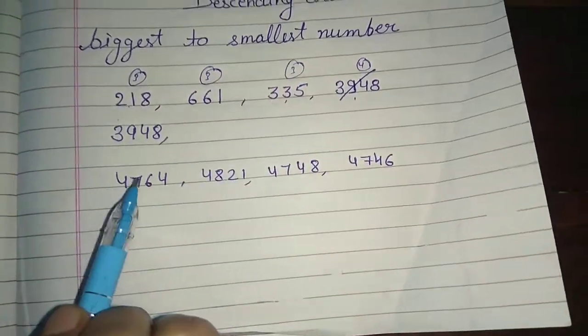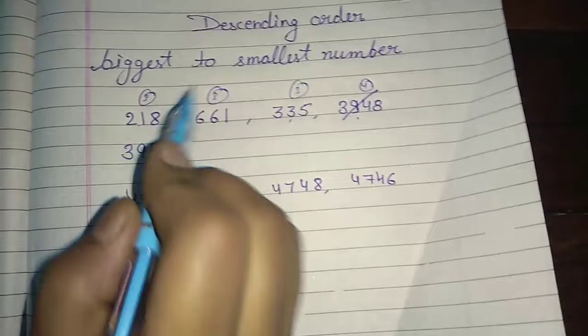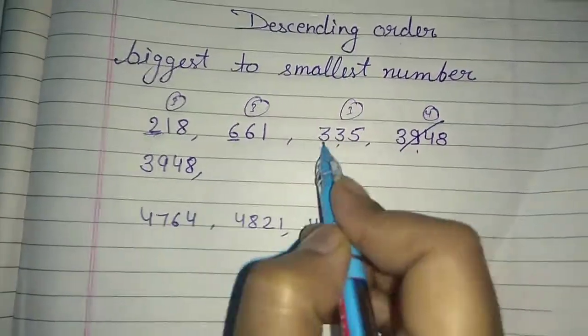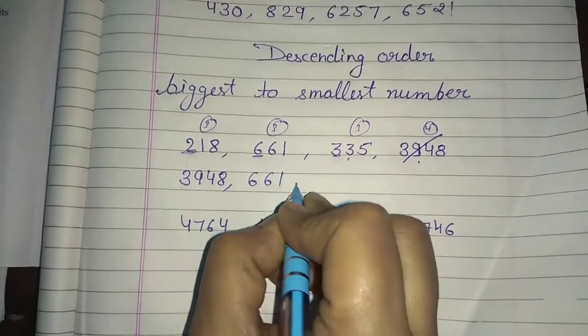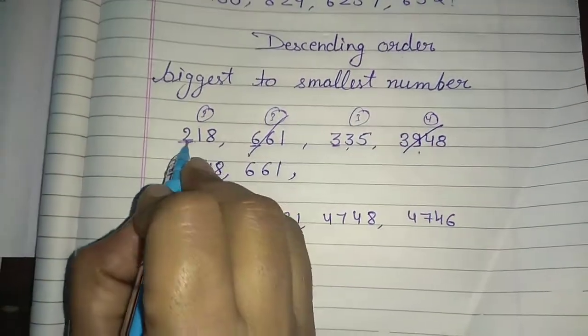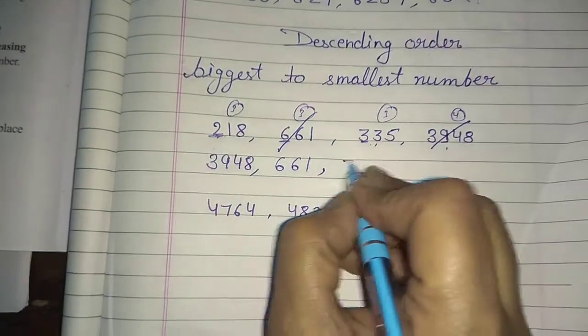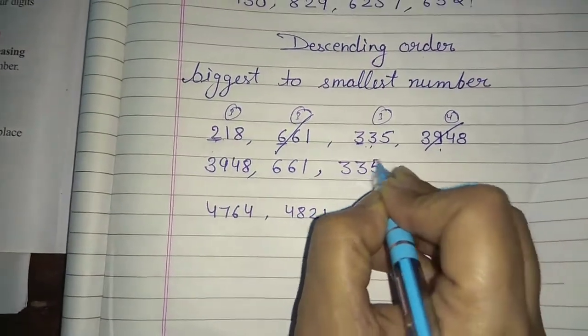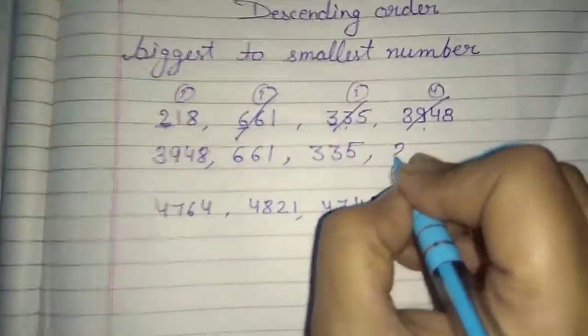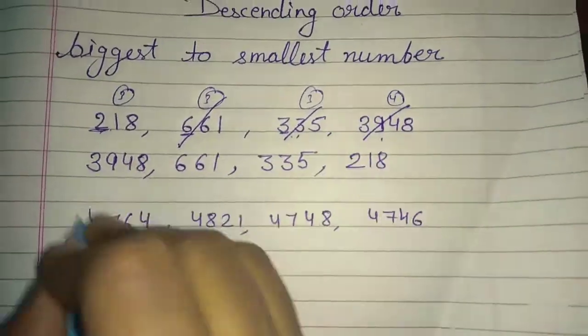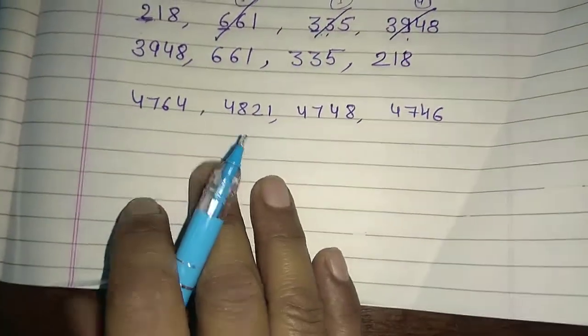And this number is selected. Now see, in the hundred place we have 3, 3 digits. So now we see the hundred. 2, 6 and 3. So which is biggest number? 6. So what will it be? Six hundred sixty-one. This number is selected. Now two biggest, this three. Obviously three. So three hundred, sorry, three hundred thirty-five. This number is selected. And last and remaining number is 218. And this order is descending order.